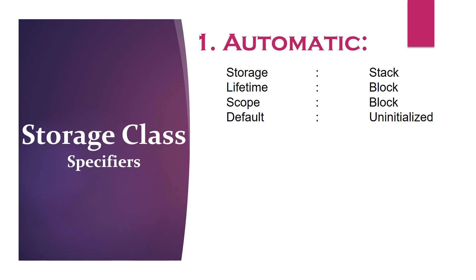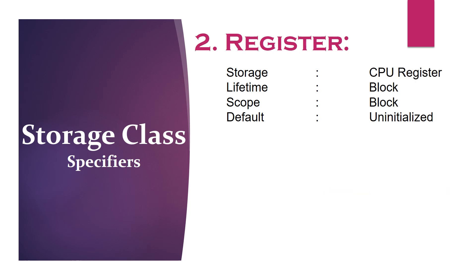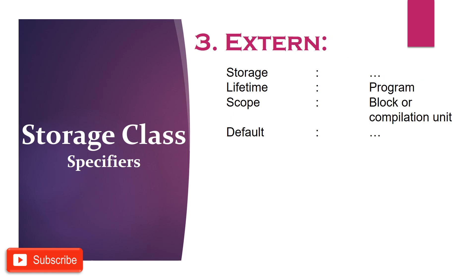A variable declared within a function is by default an automatic or local variable, which is created and stored on the stack memory and destroyed when the function returns. A variable declared with the register specifier has similar lifetime and scope as automatic, but the storage will be the CPU internal register. Register specifiers are useful for variables which need faster access, as accessing the CPU register is much faster compared to stack memory. The external storage class specifier is a little different.